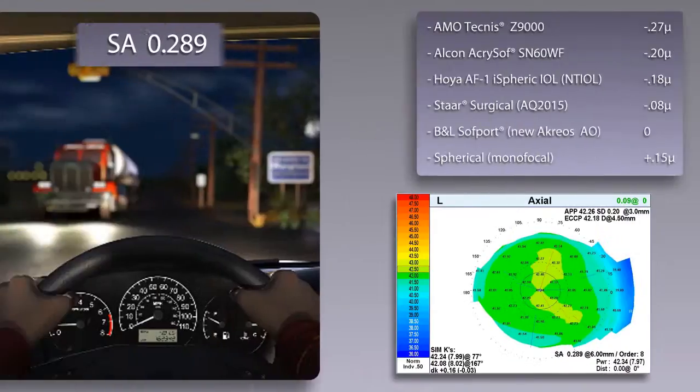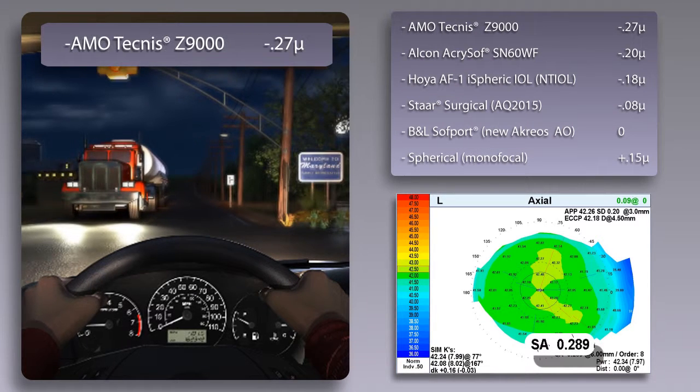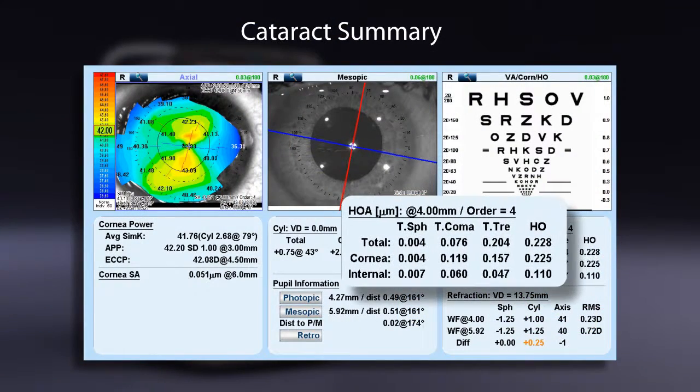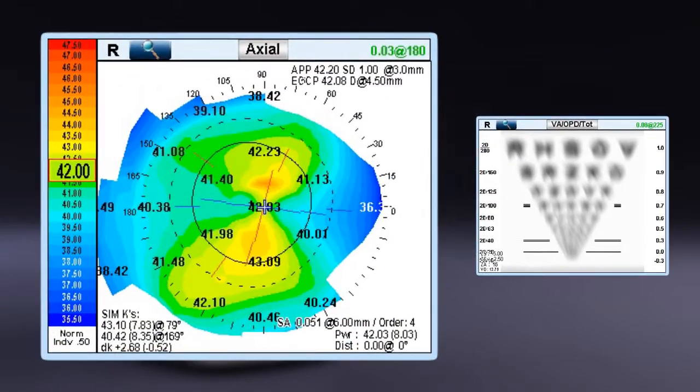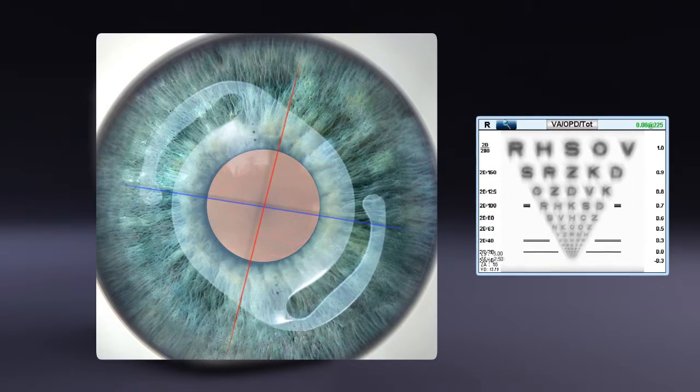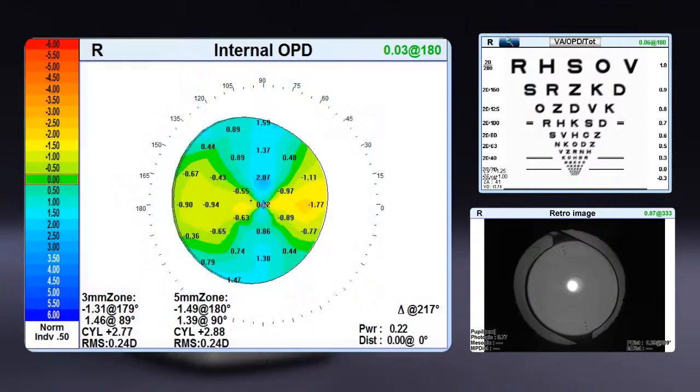IOL applications include spherical aberration of the cornea for aspheric IOL selection. Cataract summary displays any high-order aberrations that may remain after the cataract is extracted. Map view shows pre-op measurement with the ability to display the post-op measurements showing the correction along with the markings of the toric IOL in the retroillumination image, and lens placement with the internal OPD map.